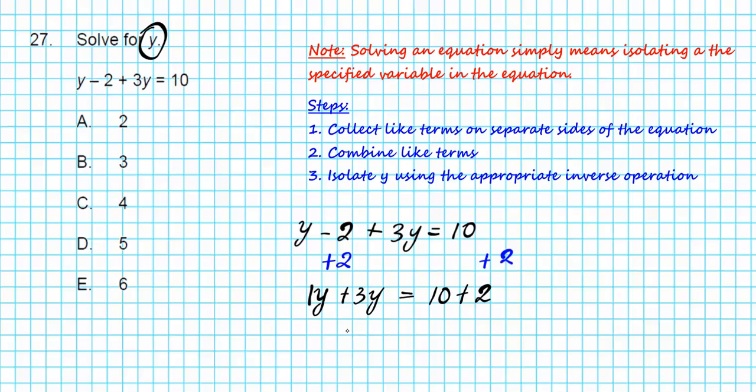Combine these two. Imagine the one here, you have 4Y equals 12. Divide both sides by 4, and your final answer is Y equals 3. Option letter B.